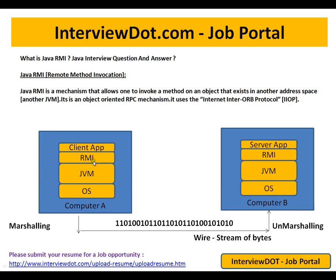The RMI Stub will pack the objects, locate the corresponding machine, and send the data. As you can see, it is converted into a stream of bytes — that means the serialization process has happened — and these signals are sent through the wire. Once it reaches computer B, there is one more component called RMI Skeleton.